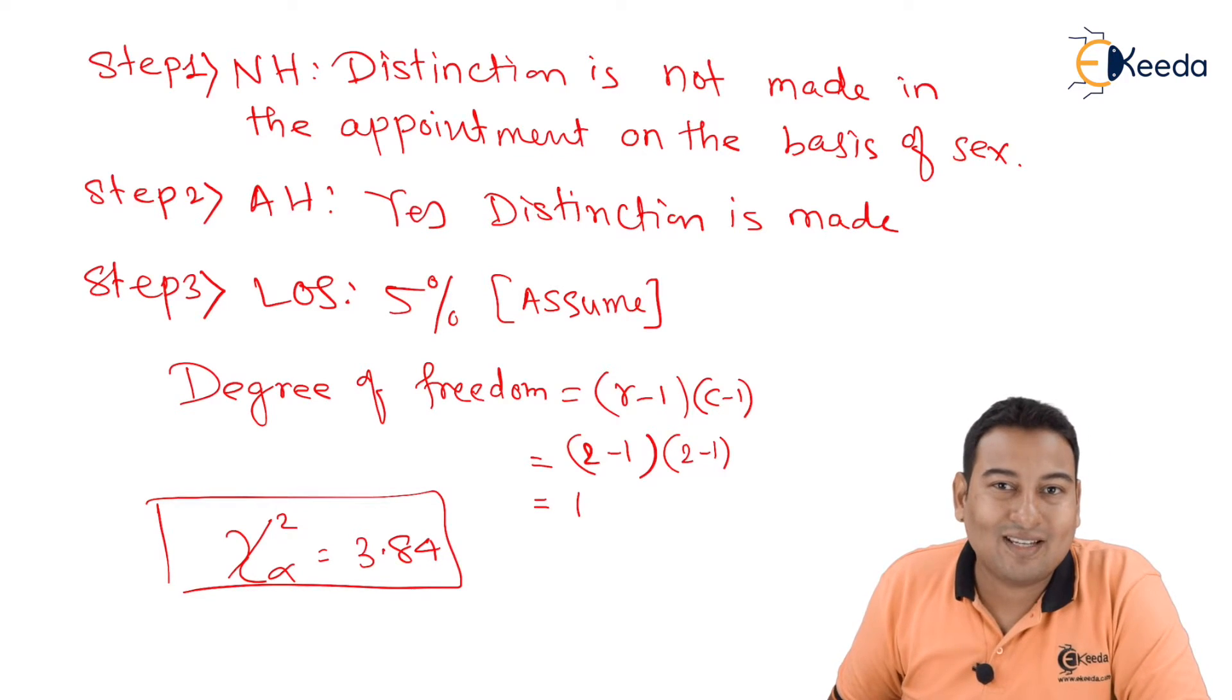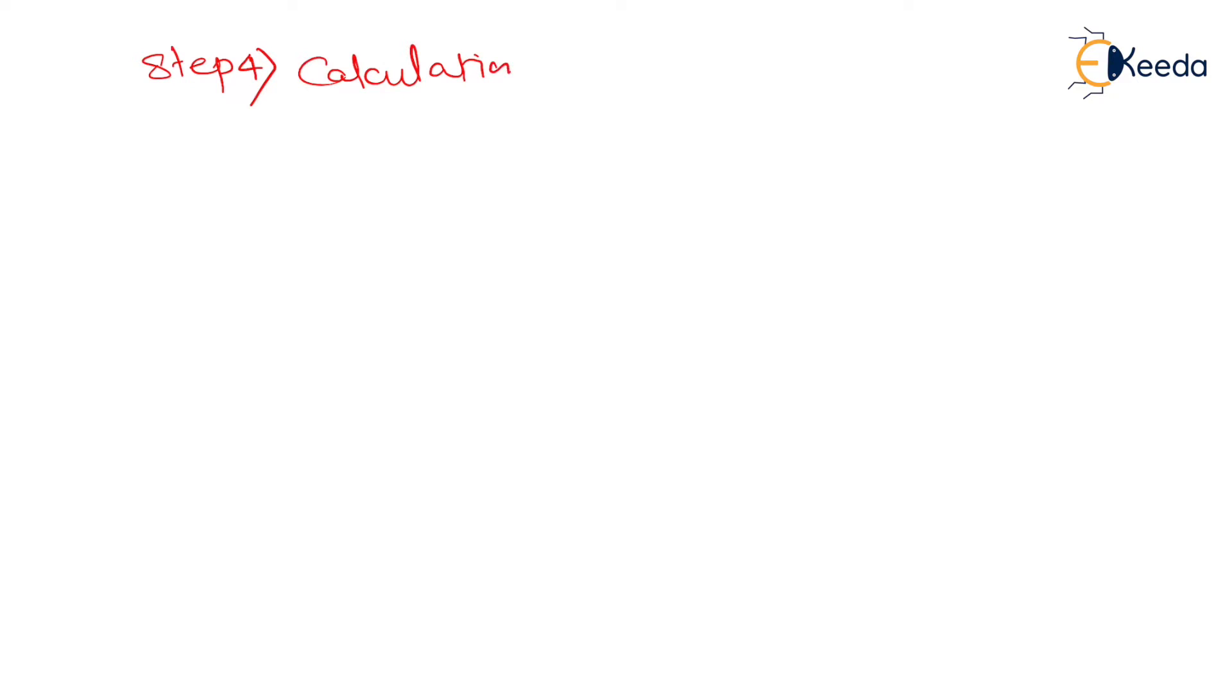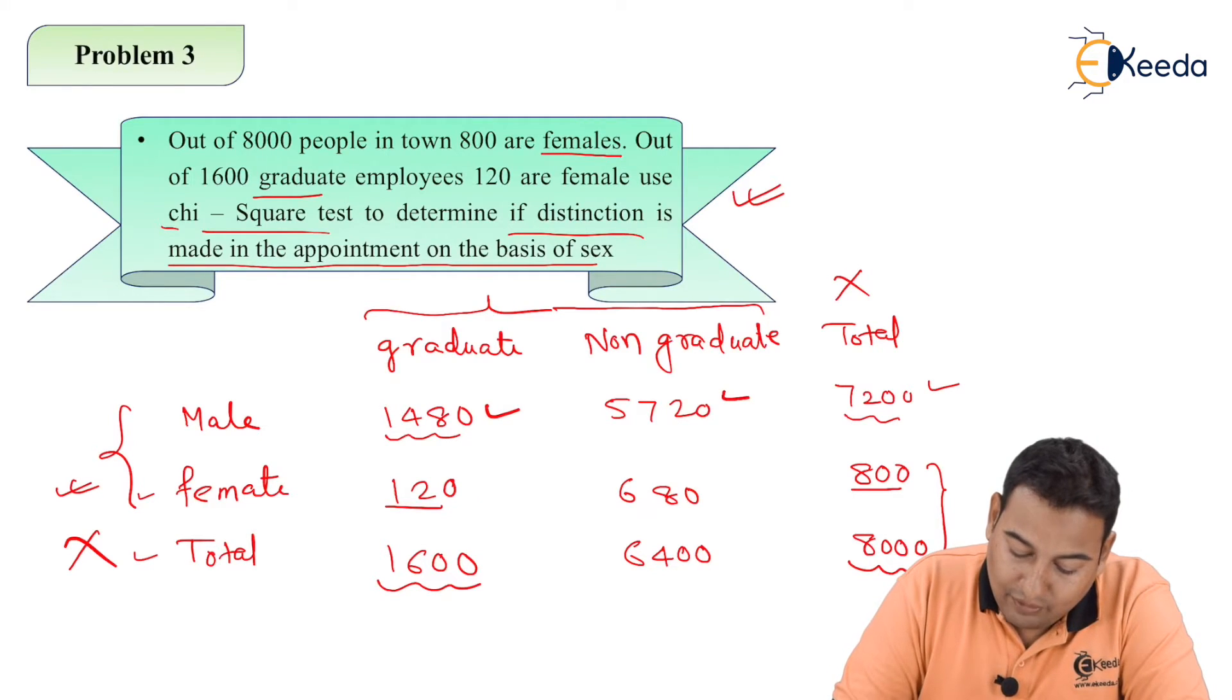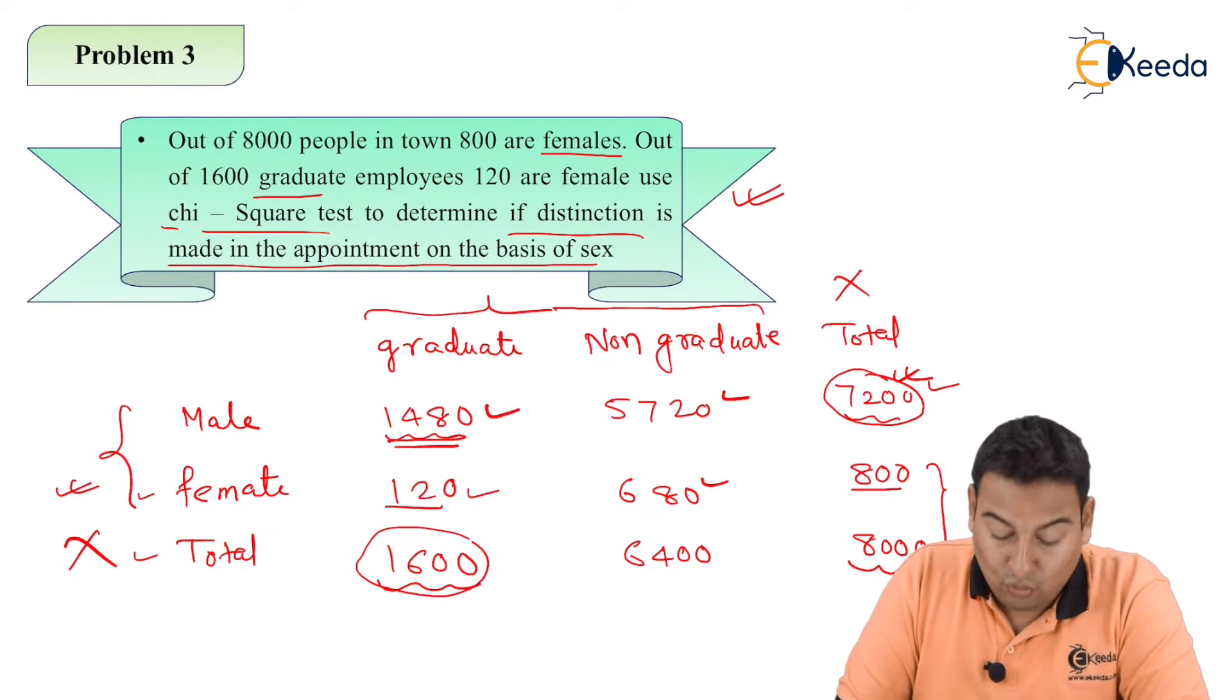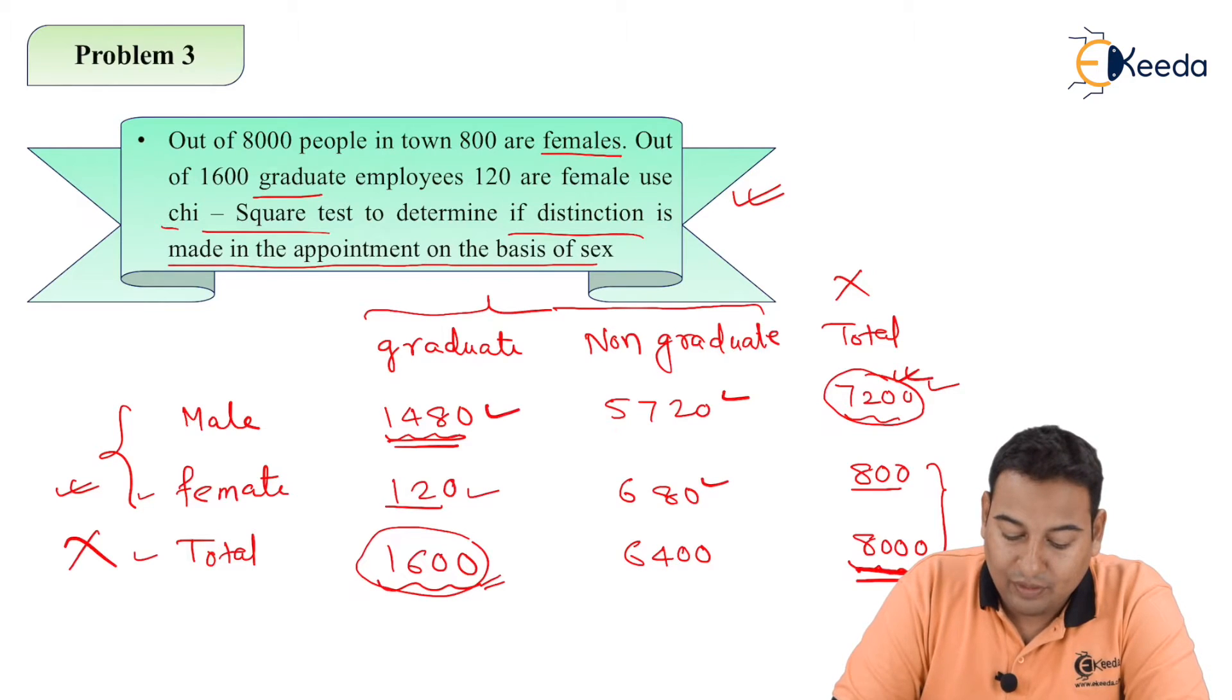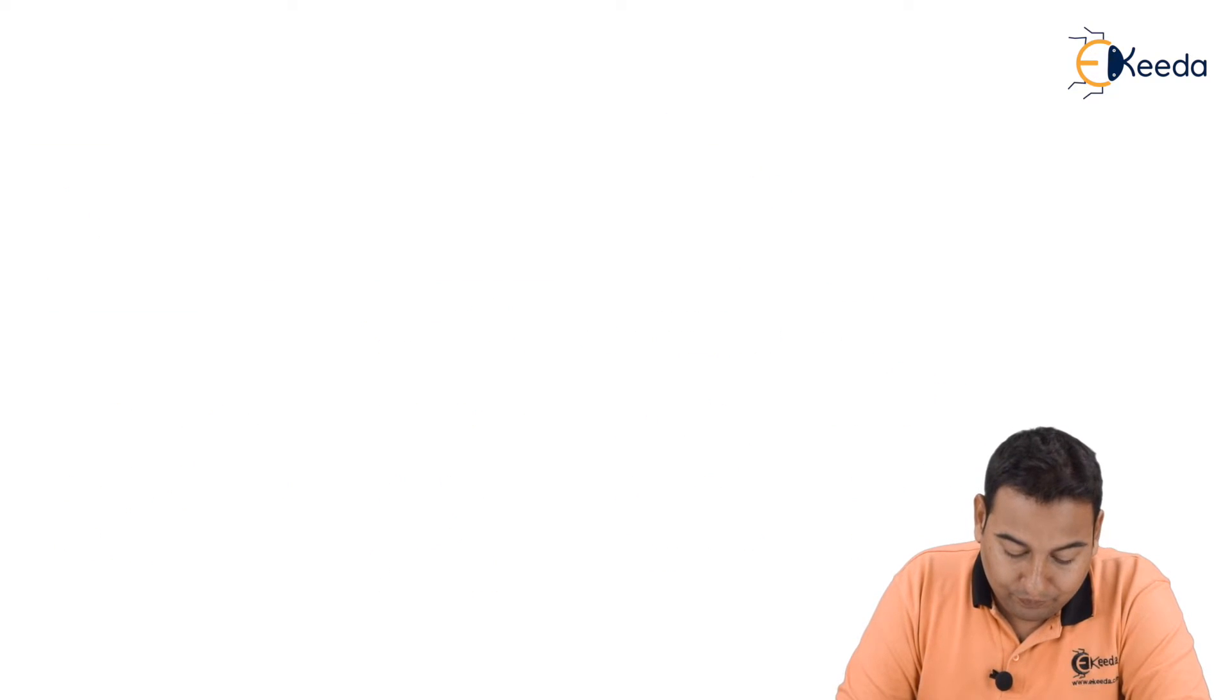Let's move on to step number four, the calculation part. For calculation, observed values are 1480, 5720, 120, and 680. Now let's apply the formula. For 1480, it is row total into column total upon grand total, that is 7200 times 1600 upon 8000. For 5720, it is 7200 into 6400 divided by 8000. Likewise we're going to find it out for all the values.